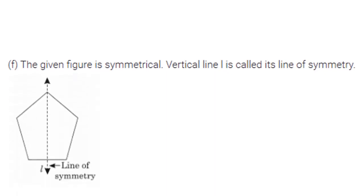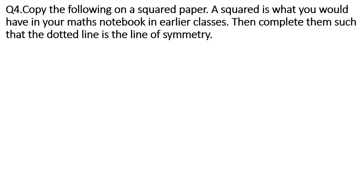Figure F is a pentagon — but not a regular pentagon since all five sides are not equal — and it has only one vertical line of symmetry. Question 4 involves copying figures onto squared paper (the boxes notebook from earlier classes) and completing them so that the dotted line is a line of symmetry, by counting boxes to mirror the other half.